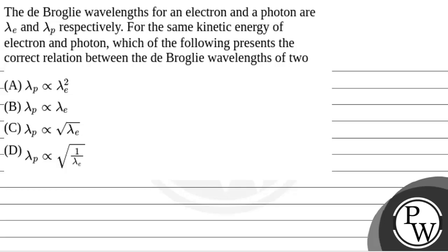Let's read the question. The question says that the de Broglie wavelengths for an electron and a photon are lambda_e and lambda_p respectively. For the same kinetic energy of electron and photon, which of the following presents the correct relation between the de Broglie wavelengths of the two?